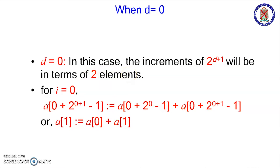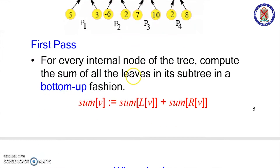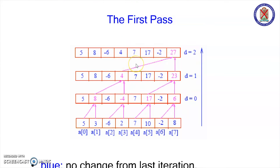We will add two elements. We add A[0] to A[i], and A[0] to A[i]. This is the first pass where d equals 0. These two elements are added — 3 and 3 — these two are added.